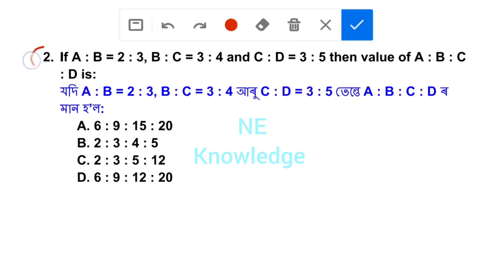Question number 2: if A:B is equal to 2:3, B:C is equal to 3:4, and C:D is equal to 3:5, then find the value of A:B:C:D.